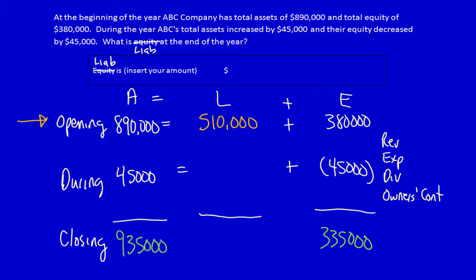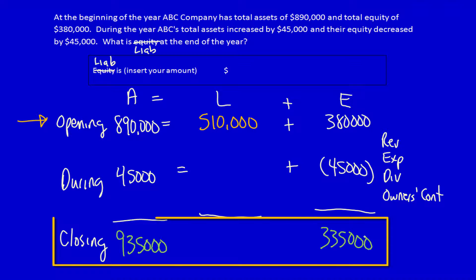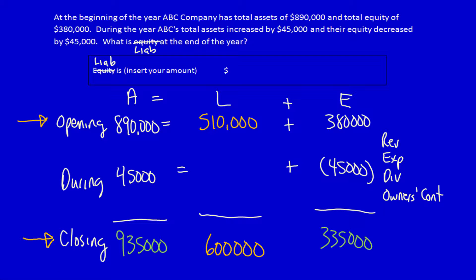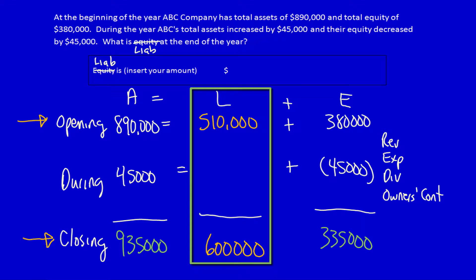Now that I've got assets and equity at the end of the year, I can use the row and solve for liabilities at the end of the year: 935,000 minus 335,000 is equal to 600,000. I can now use this information to solve for the during row: 600,000 minus 510,000 is positive 90,000.